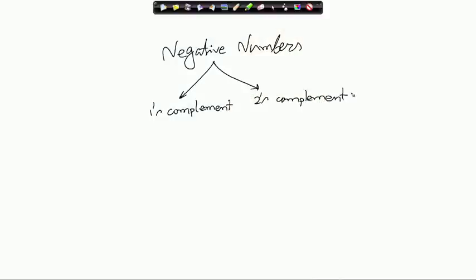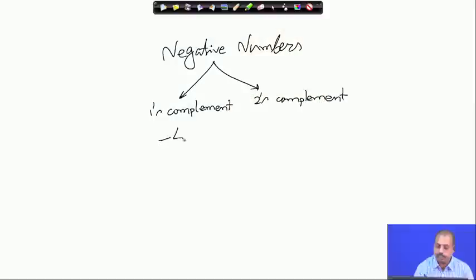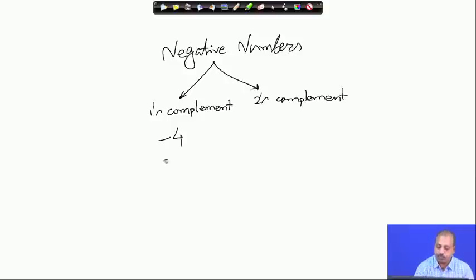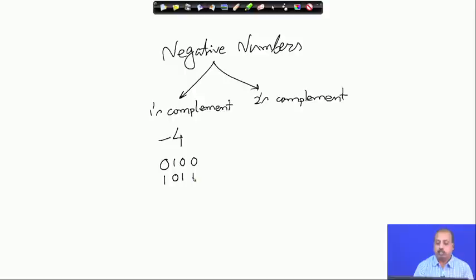For example, if I have to represent the number minus 4 in a 4-bit number system, first we take the representation of plus 4 in the 4-bit number system. Plus 4 in the 4-bit number system is represented as 0 1 0 0. If we want to represent minus 4, we complement each of the bits: this bit becomes 1, this is 0, this is 1, and this is 1. So 1 0 1 1 is the minus 4 representation in the one's complement number system.